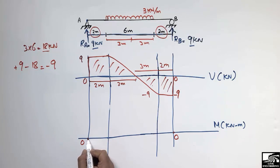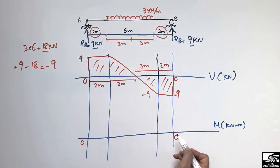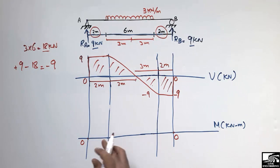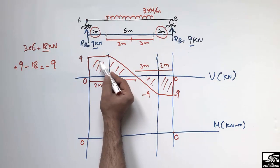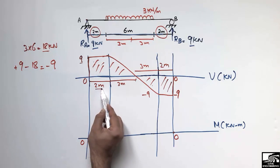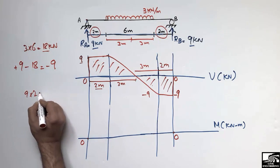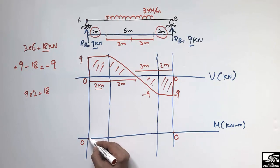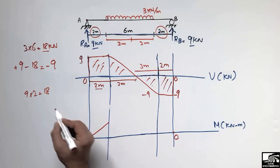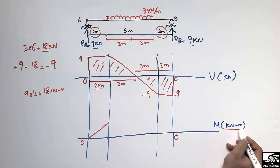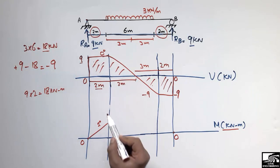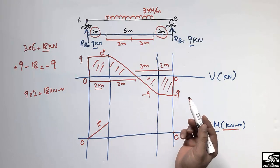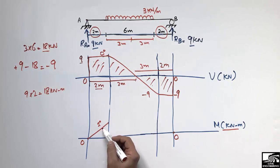Since hinge and roller supports cannot resist any moment, bending moment values are zero at both supports. Starting from the left, the area of the first rectangle (height = 9, width = 2) is 9 × 2 = 18 kN·m. Because the shear force here was a zero-degree (constant) line, the bending moment is a first-degree (linear) line rising to 18 kN·m.